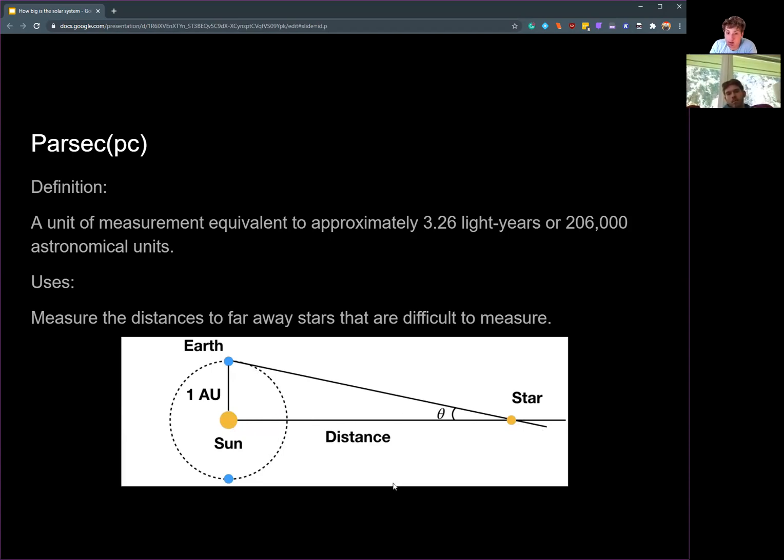And this distance works out to 3.26 light years. So this is very helpful for measuring far off stars and galaxies and other bodies where it's really difficult to find an accurate measurement. And it's just very useful for creating precise measurements for far away objects.